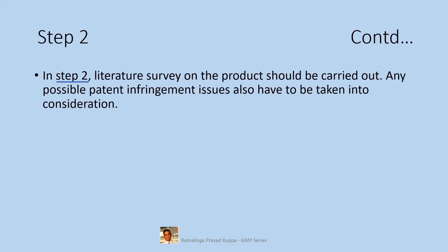In Step 2, a literature survey on the product should be carried out. Any possible patent infringement issues also have to be taken into consideration. Support from various scientific internet sites may be taken. There are several paid sites and free sites for literature survey. It is recommended to focus on economically viable options for the process.